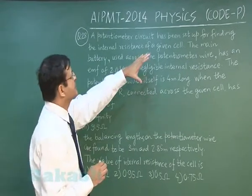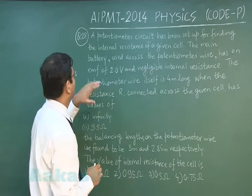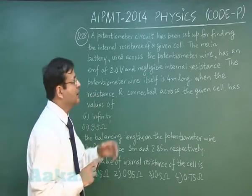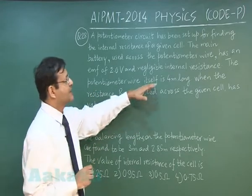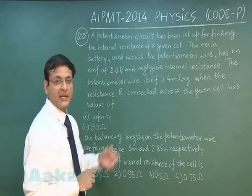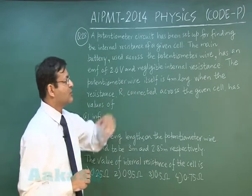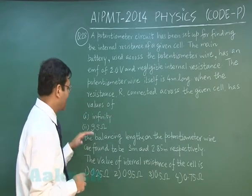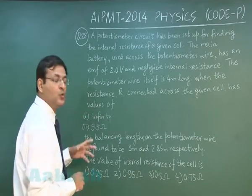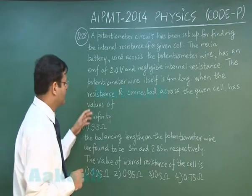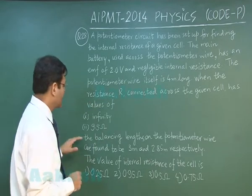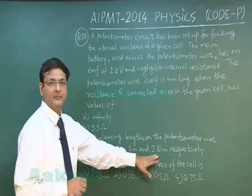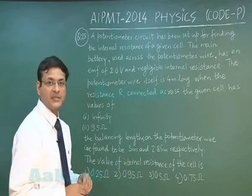It says that main battery used across the potentiometer wire has an EMF of 2 volt and negligible internal resistance - this is immaterial to me. The potentiometer wire itself is 4 meter long - that also is immaterial. When the resistance R is connected across the given cell, the values are infinity and 9.5 ohm. There are two instances for which the balancing lengths on the potentiometer wire are found to be 3 meter and 2.85 meter. This is the data you are expected to use.